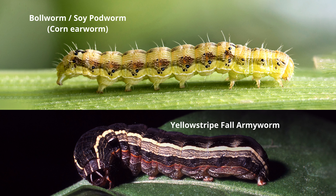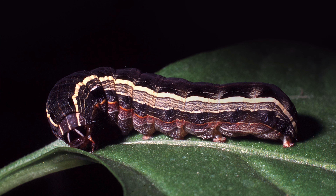The biggest difference and easiest way to tell them apart is the yellow striped armyworm — the name kind of gives it away, as it's going to have a yellow stripe that runs down its body.